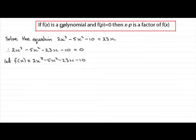Because if f(x) is a polynomial and f(p) equals zero, then x minus p is a factor of f(x). This is the factor theorem.